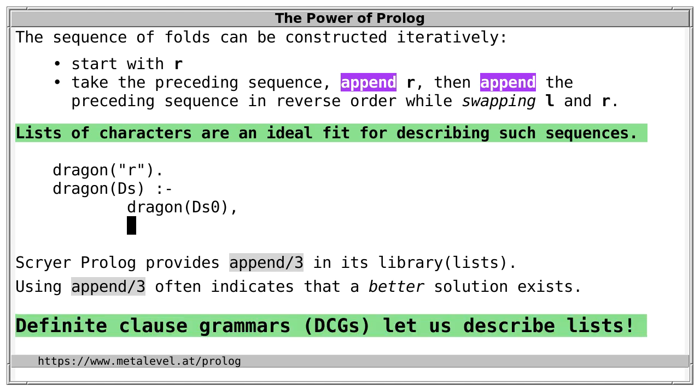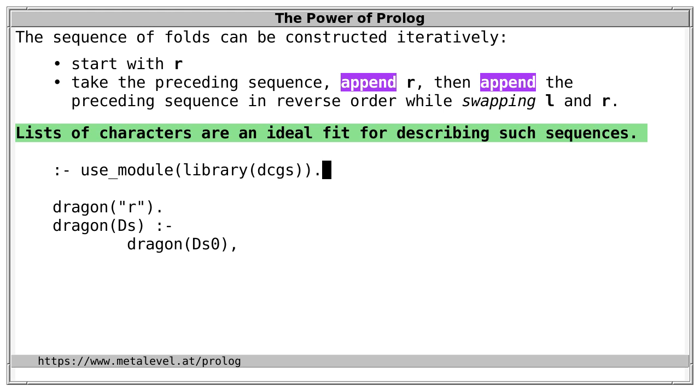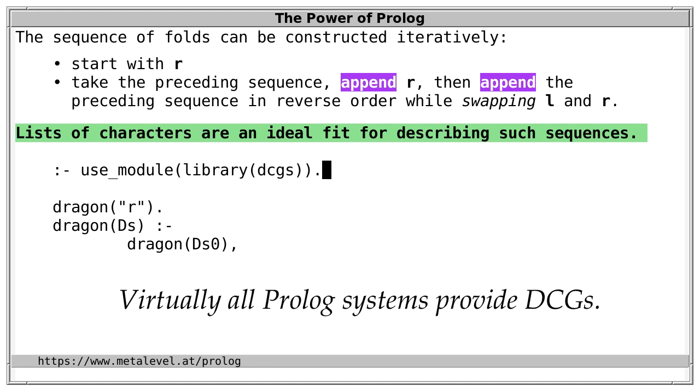And especially when you see two or more calls of append in a row, then it can usually be solved more elegantly. Specifically, definite clause grammars, DCGs, are often a great fit for describing lists. In fact, they are one of the major attractions of Prolog, because they make reasoning about lists so convenient. And they let us avoid append entirely. So, to use DCGs in Scryer Prolog, we load the DCGs library.